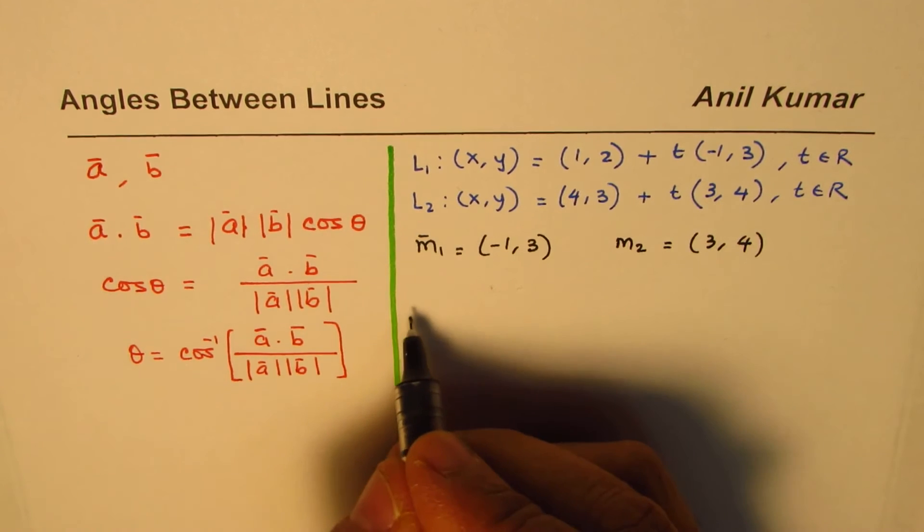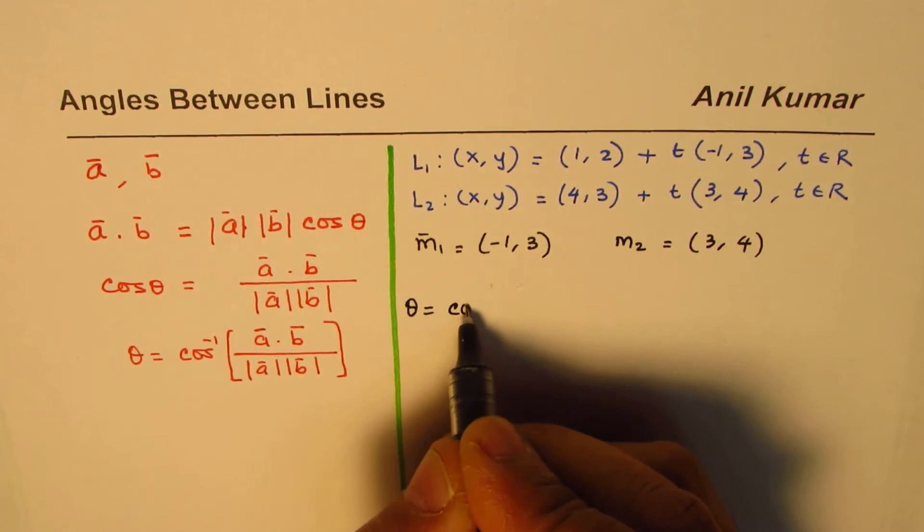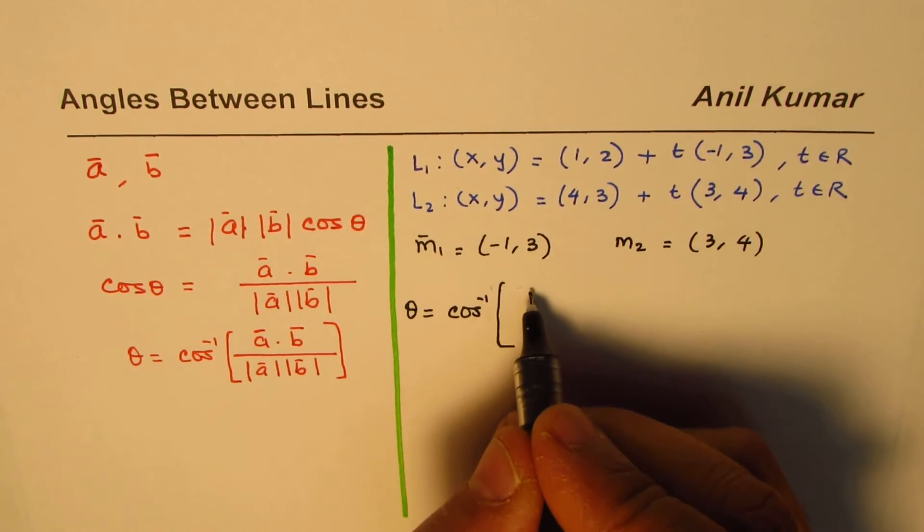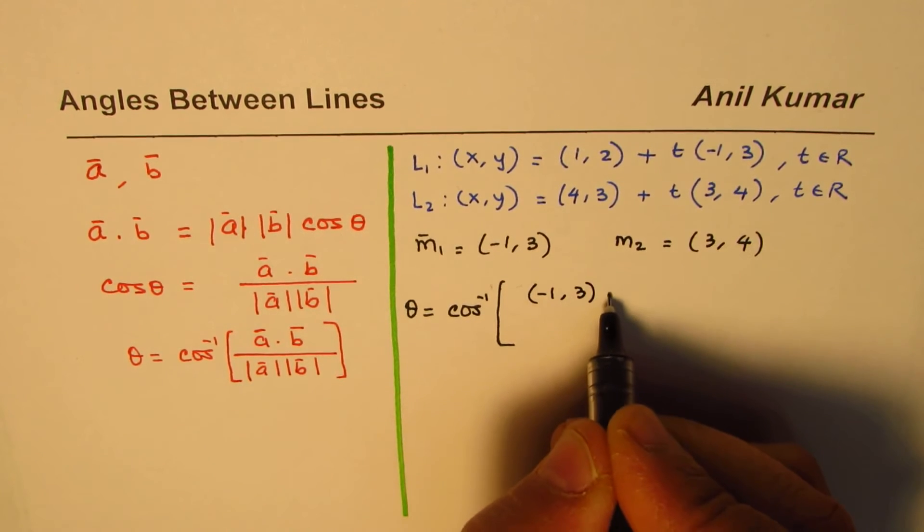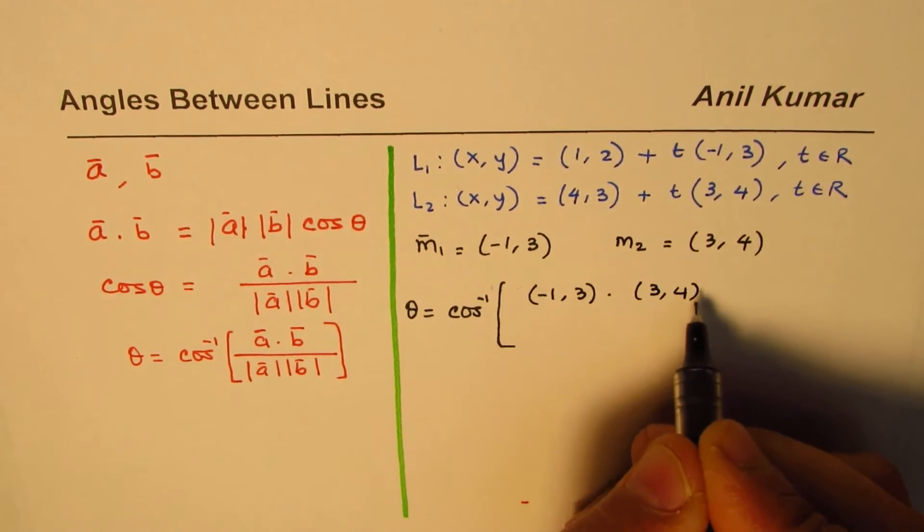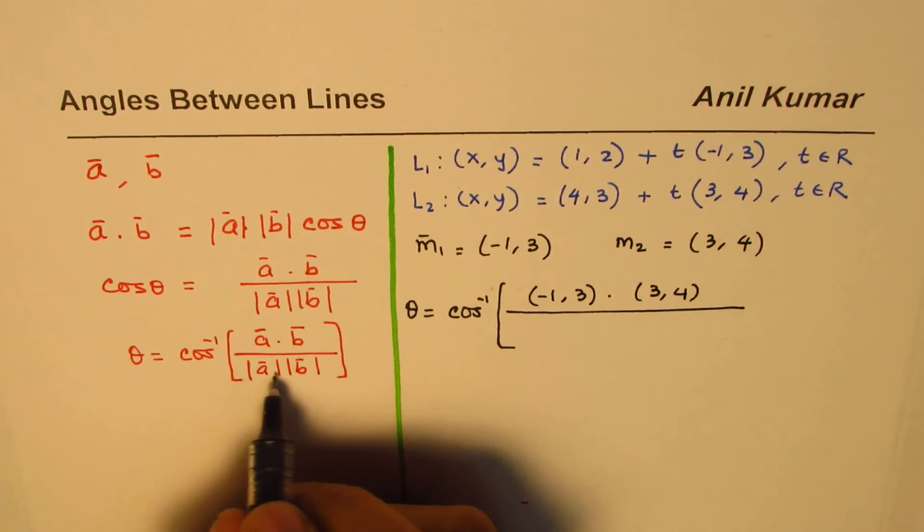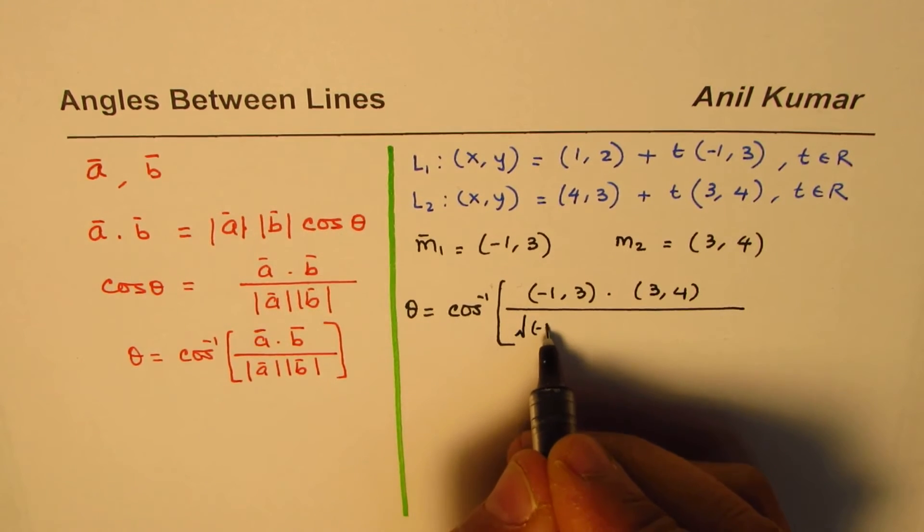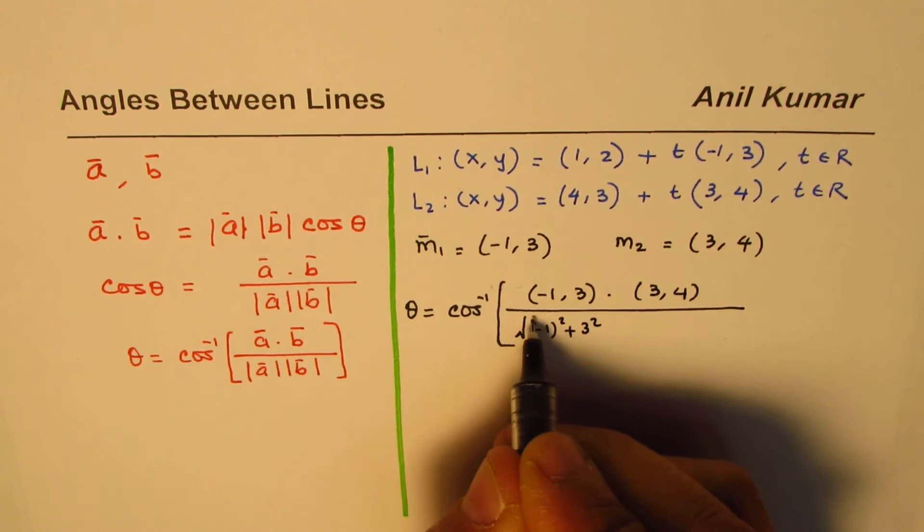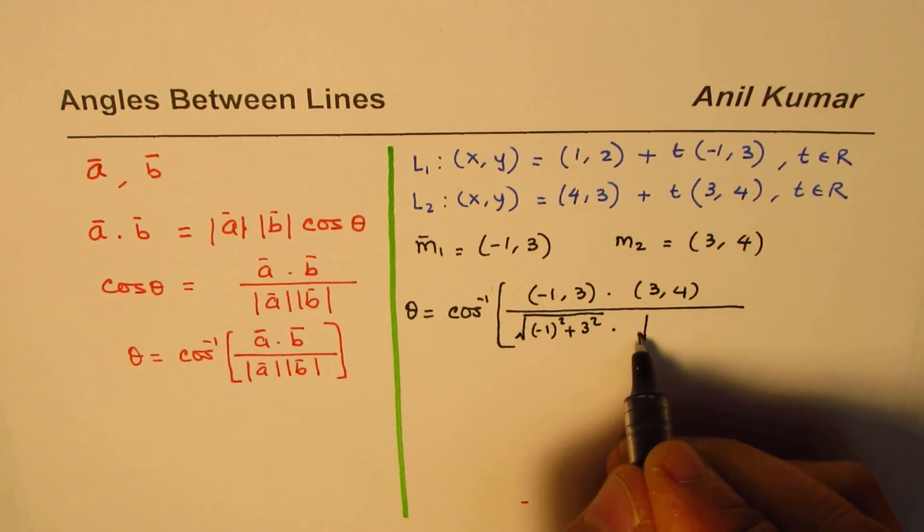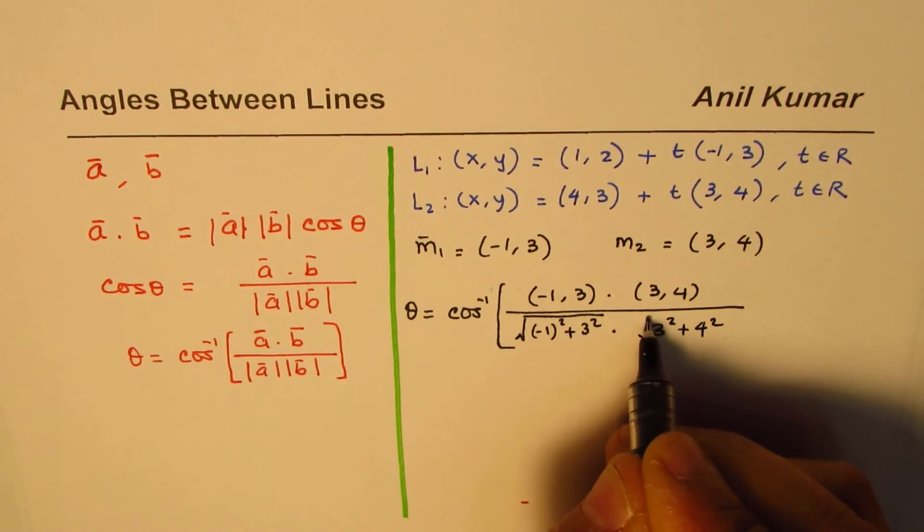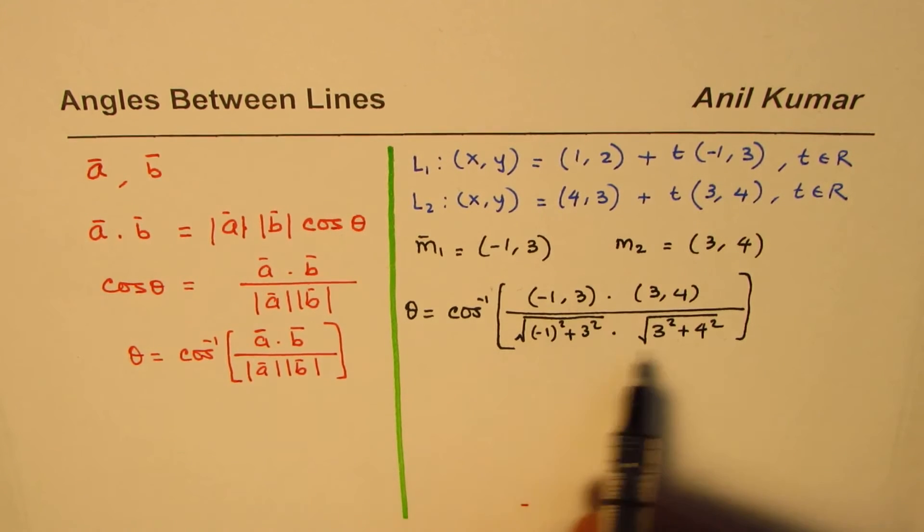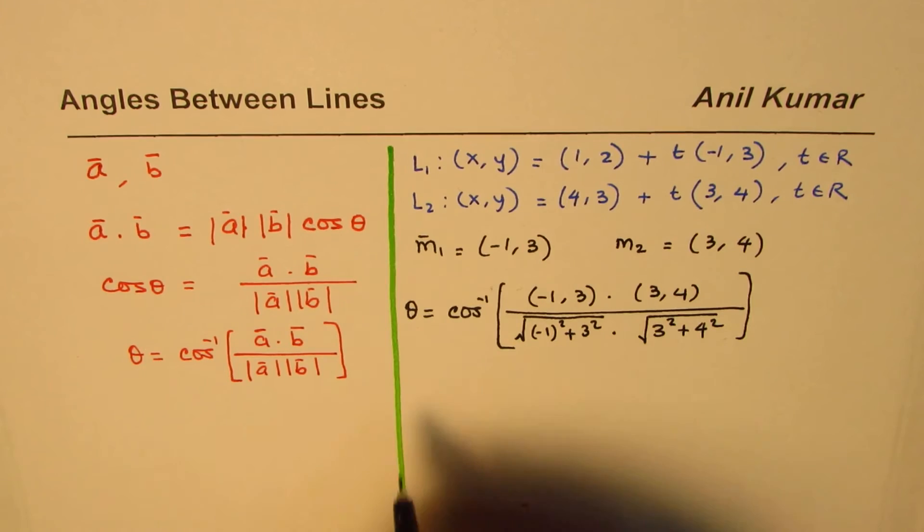We can write down this formula now and say theta equals cos inverse of the dot product of these two, which is (-1, 3) dot product with (3, 4), divided by their magnitudes, which are square roots of (-1)² + 3² times 3² + 4².